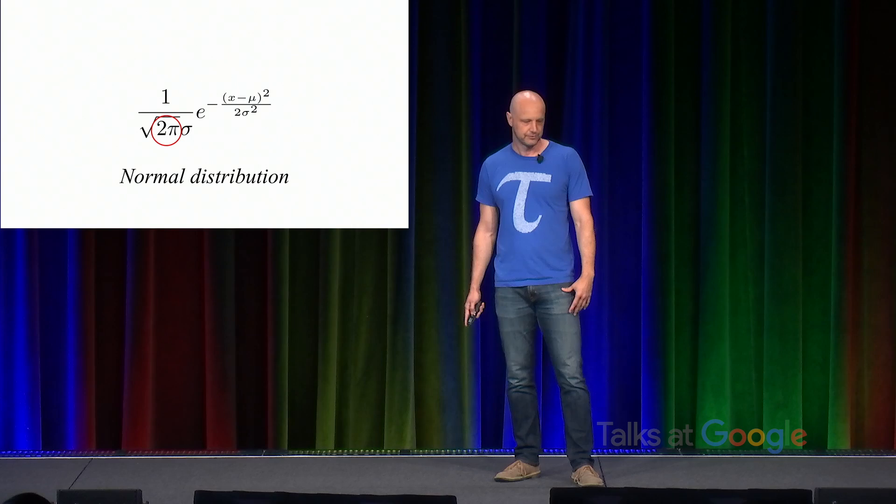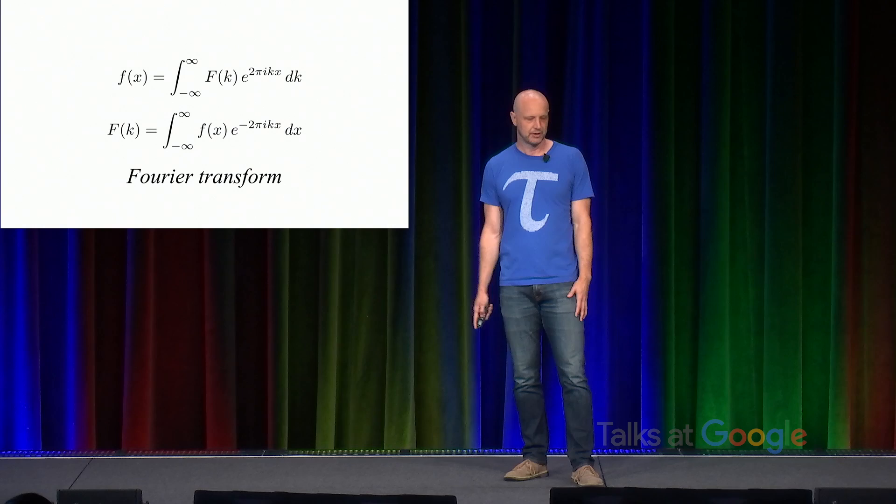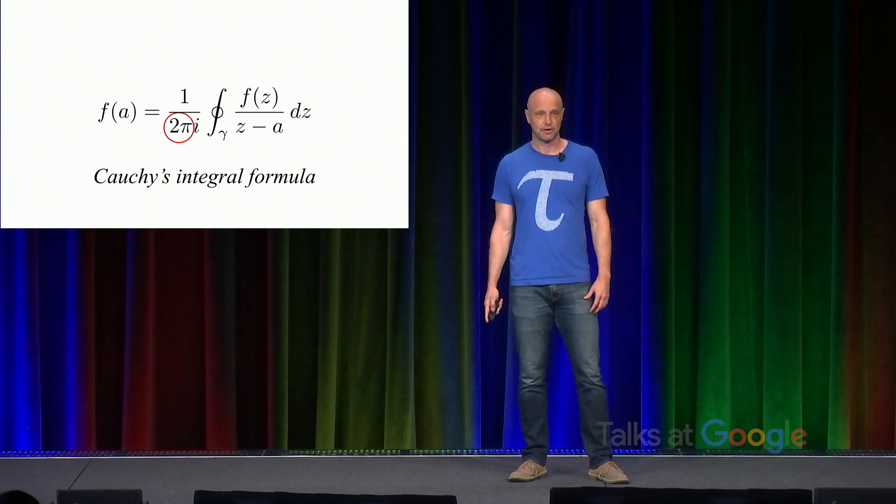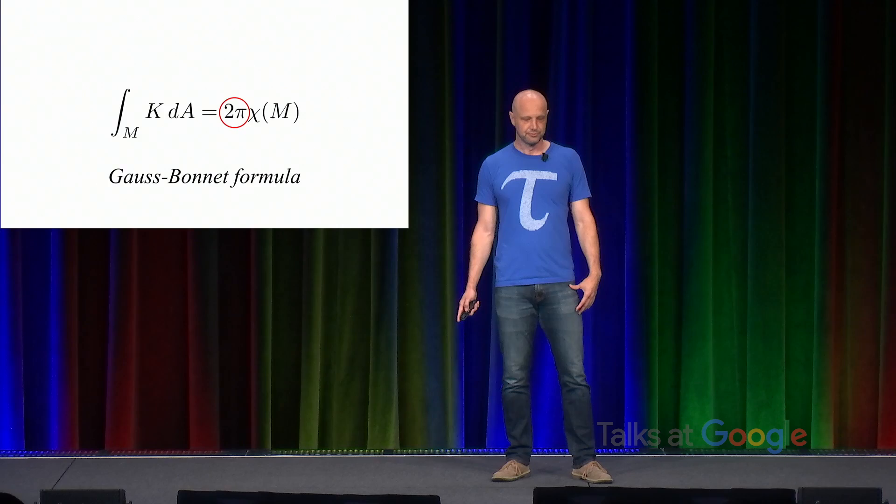Fourier transform, important in many areas of science and mathematics. There's a 2 pi there. Cauchy's integral formula in complex analysis. There's a 2 pi. Gauss-Bonnet formula in differential geometry. The so-called nth roots of unity. There's a 2 pi.